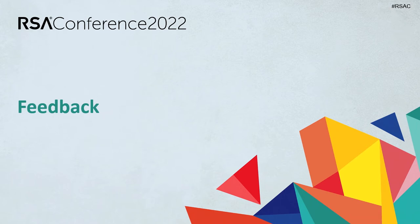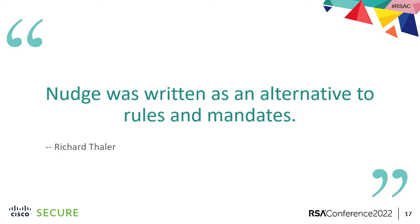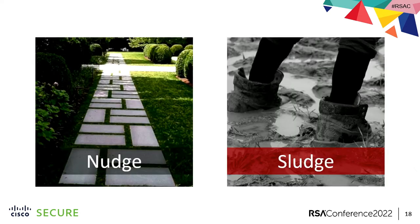Let's talk about feedback. In PDCA terms: design is the plan, security operations is the do, metrics and retrospectives are the check and adjust — that iteration. One interesting thing about the choice aspect is choice architecture, popularized by Richard Thaler, who called it 'nudge.' A nudge is the alternative to rules and mandates. If tight rules and mandates cause people to be too constrained and therefore too creative, we'll nudge them along the path gracefully and gratefully, allowing them to make the correct choices — often with good default choices to keep people in System 1 thinking and make security routine and a good habit.